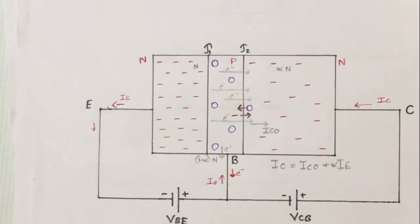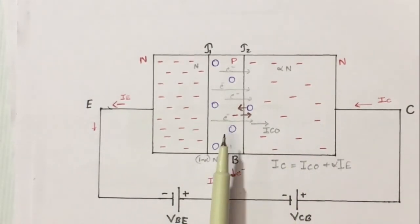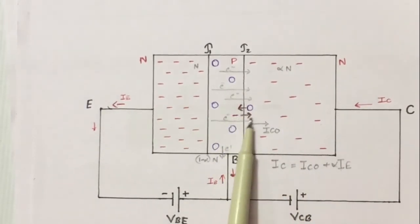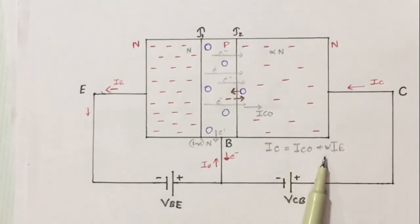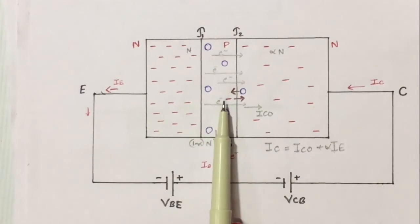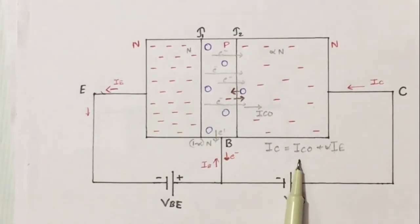There is one more thing: the reverse saturation current. When junction J2 is reverse biased, there must be a reverse saturation current. We have minority charge carriers on the N side (holes) and on the P side (electrons). These holes and electrons move in their respective directions, producing a reverse saturation current ICO when junction J2 is reverse biased. The subscript C is used because it is a collector current, and O stands for open circuit because this current is measured when the emitter terminal is open-circuited. The total collector current IC equals ICO plus αIE, because αN electrons move to the collector region, producing a current of α times IE. So total current IC = ICO + αIE.